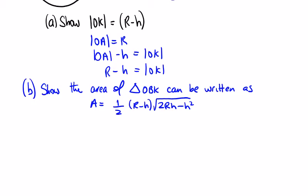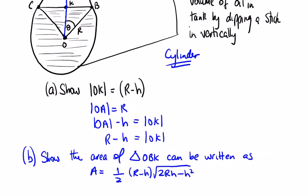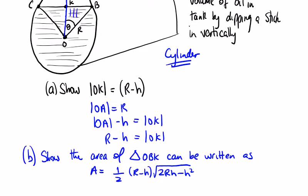Part B: show that the area of triangle OBK can be written as half times (R minus H), which we got from the previous part, multiplied by the square root of (2RH minus H squared). We're looking at this right-angle triangle — the right angle is here. Half the base times the height is where the half is coming from. R minus H is OK, that's the base, so we're looking for the height.